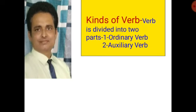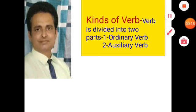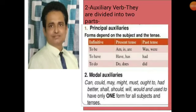At the starting of the topic verb, I explained that verb is divided into two parts: number one, ordinary verb, and number two, auxiliary verb. Ordinary verb I have already explained. Now I am going to explain auxiliary verb. Auxiliary verb is divided into two parts: number one, principal auxiliaries, and number two, modal auxiliaries.